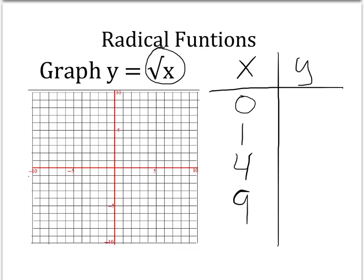If we plug in 0 for x, the square root of 0 is just 0. The square root of 1 is simply 1. The square root of 4 would be 2. And the square root of 9 would be 3.